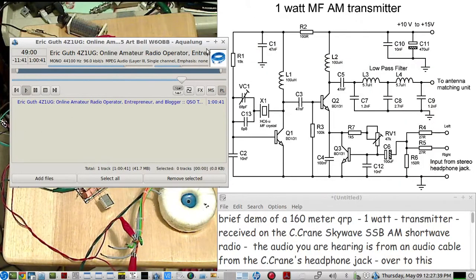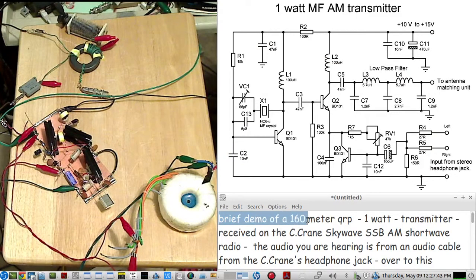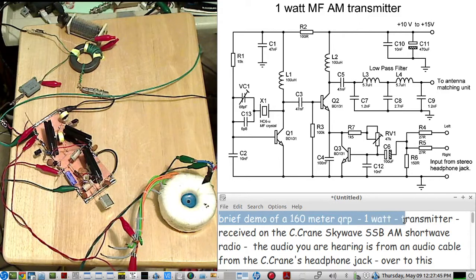On your QRZ page, you show an elaborate farm of wire antennas in your desert location. Oh, yes. What antennas do you have on your property?